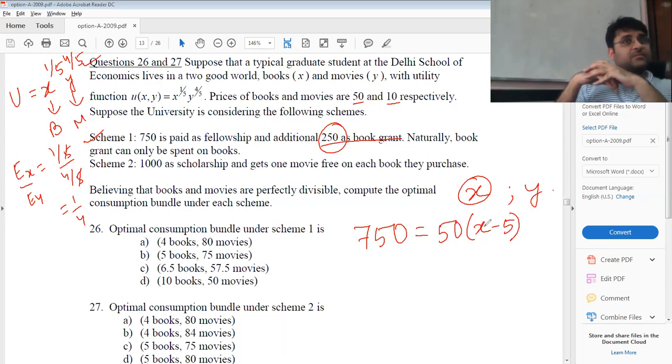Say I buy 7 books entirely. Out of the 7, only 2 books I am actually spending from the fellowship grant, from the 750 rupees fellowship grant. From 750, I am only spending on X minus 5 books. 5 books are already bought from the book grant.